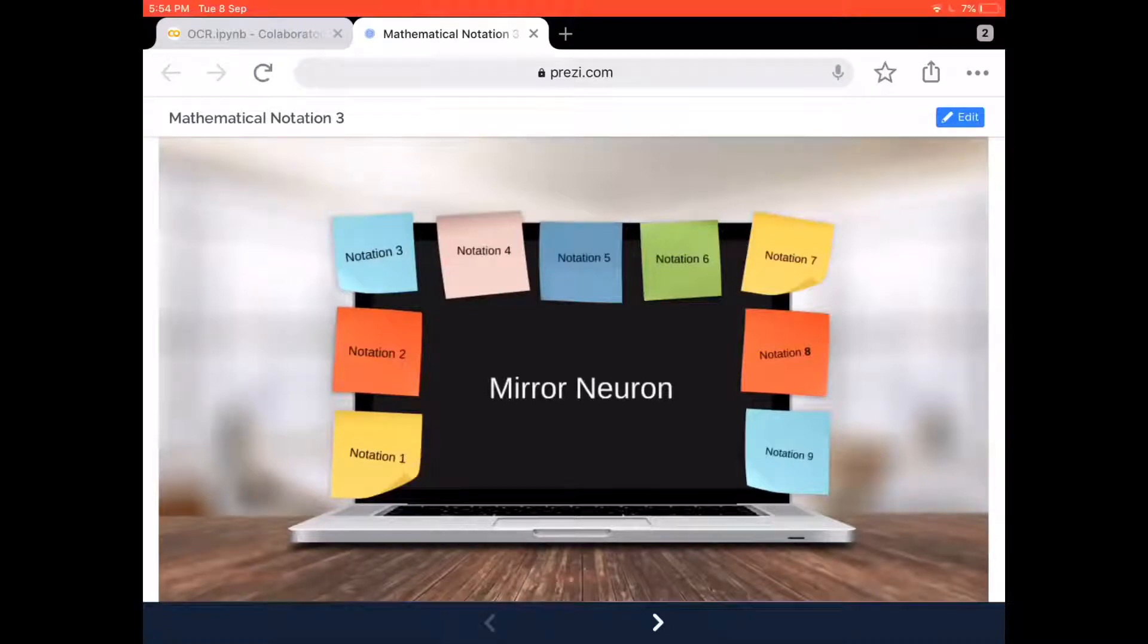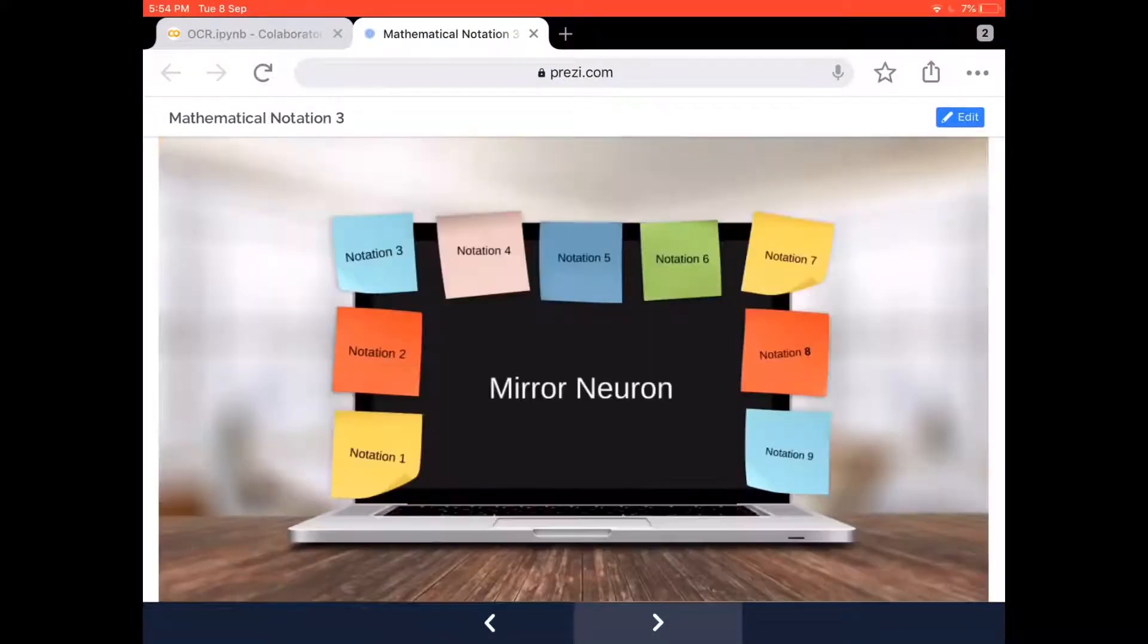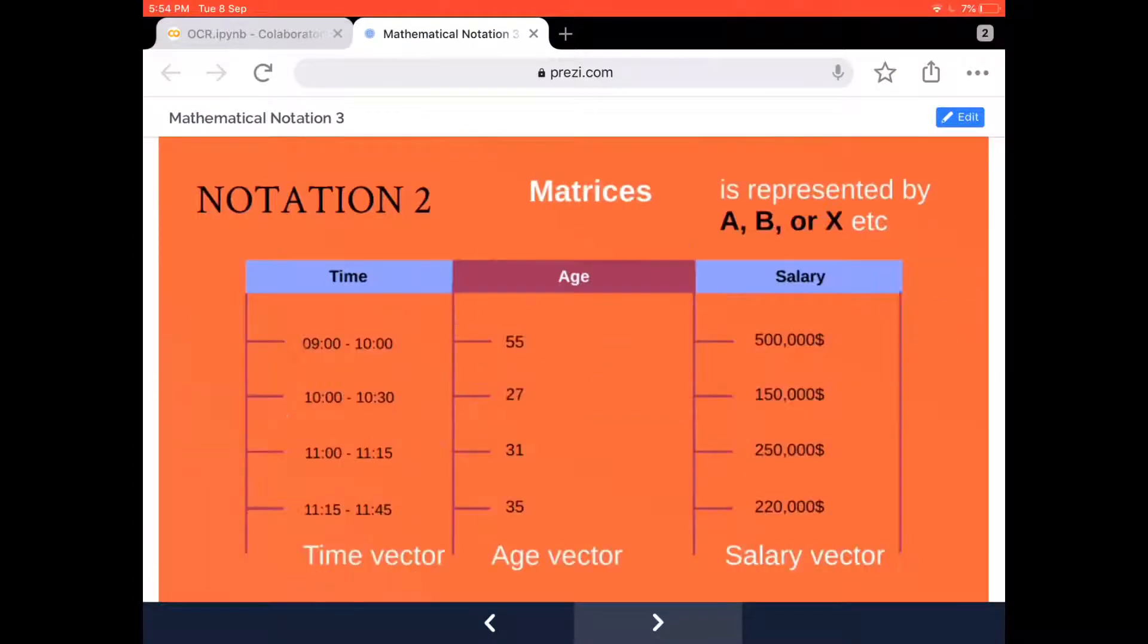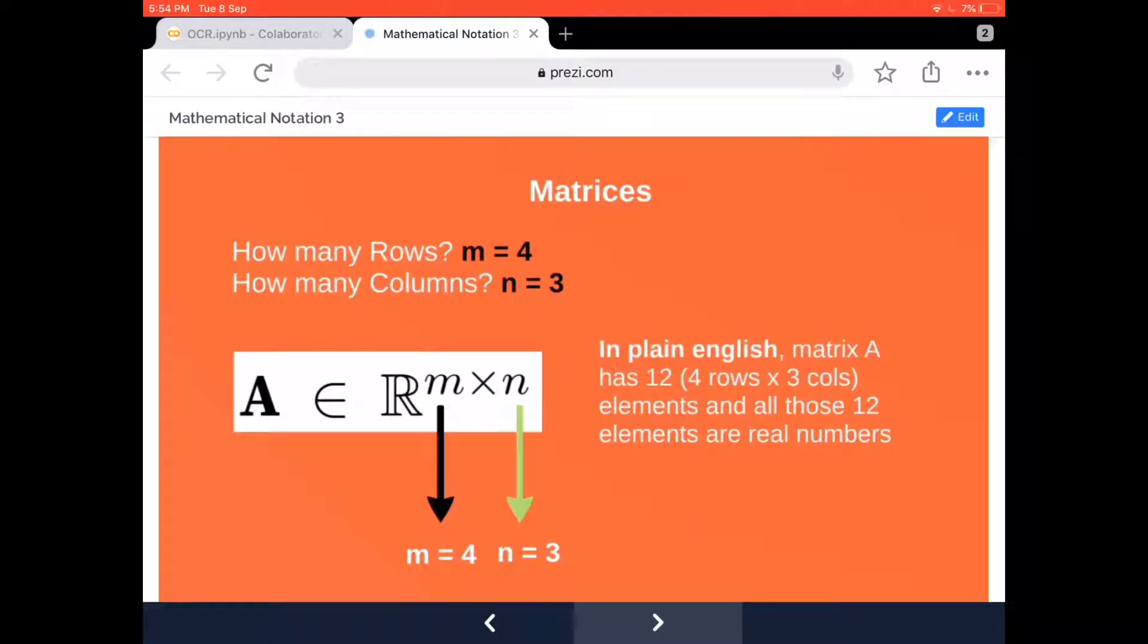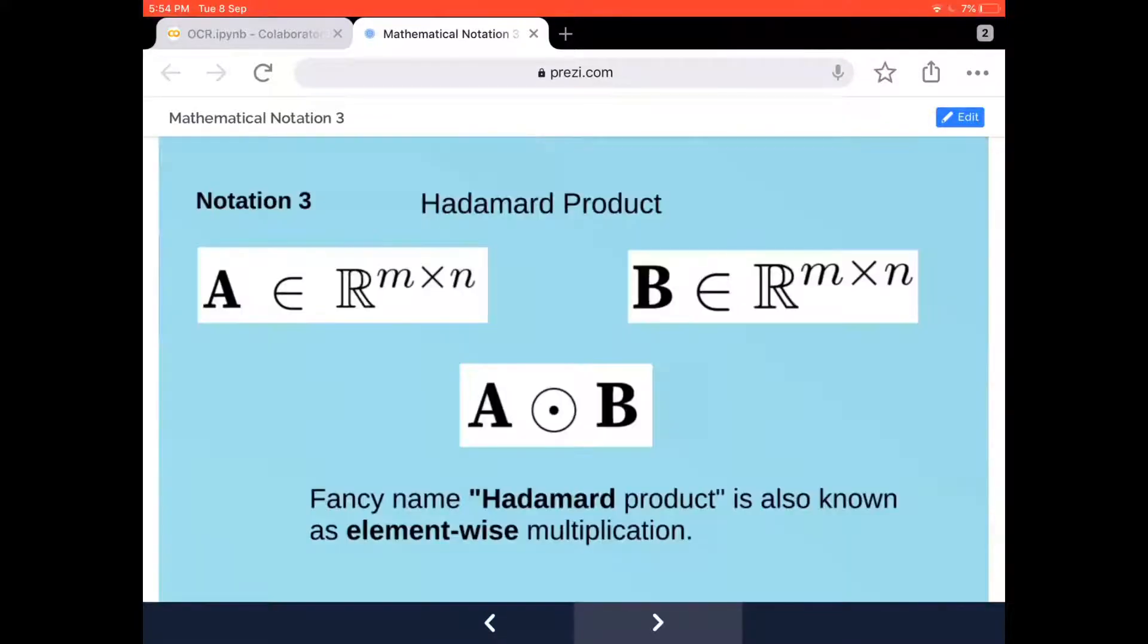Hello friends, welcome back to our channel Mirror Neuron, which means watch and learn. Today I'm going to talk about notation 3. Previously we spoke about notation on real numbers, vectors, and matrices, and how matrices with different rows and columns are represented mathematically.